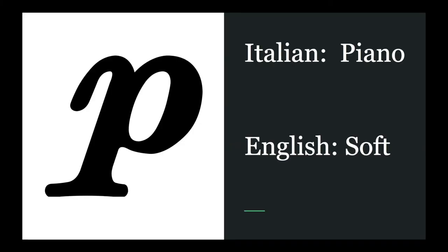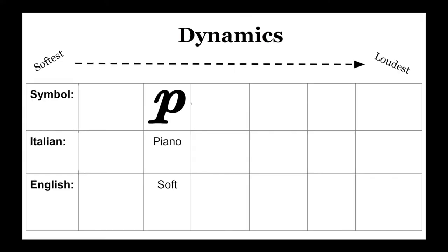Here we have the symbol P, which is short for the Italian word piano. When we see this symbol in our music, we know to perform that section soft. The piano dynamic marking is one of the foundational symbols in which other dynamic markings are built off of. Here on our dynamics chart, you can see that piano belongs on the softer end of the scale.